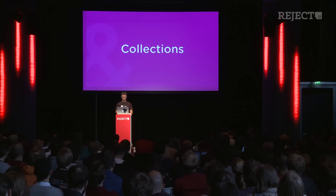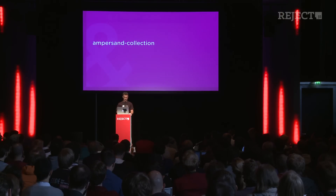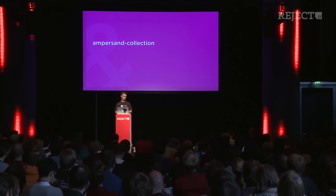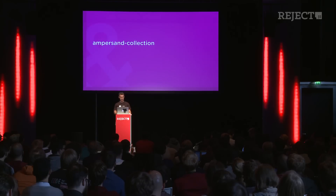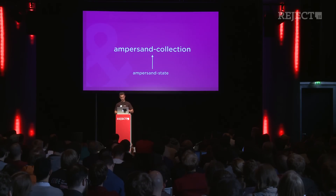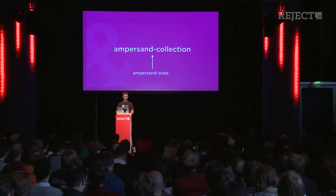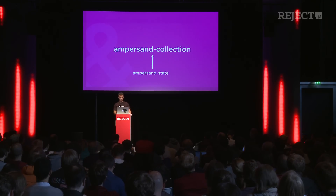Collections. There are a few types of collections — where in Backbone we had only one. The first is a simple ampersand collection. It does nothing other than store your models in one group. It also has state, so you can listen for changes on everything. And it contains some ES5 methods like reduce, filter, and map. Because ampersand supports IE9 and higher, you can use all ES5 methods.